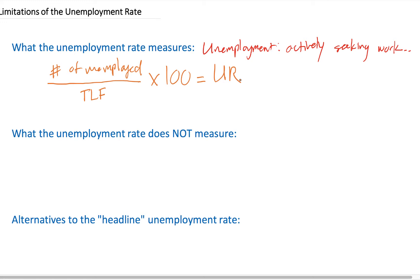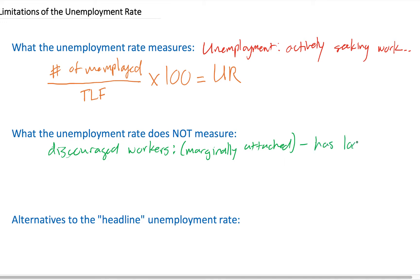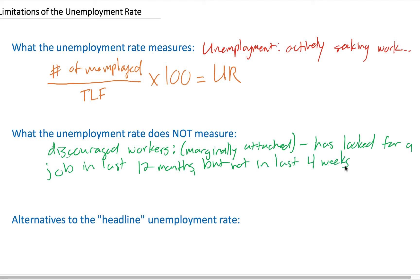That obviously is going to exclude a lot of people in the country who may not have jobs but wish that they did. The unemployment rate does not include what we call discouraged workers. Another word for discouraged workers is marginally attached workers — somebody who has looked for a job in the last year but not in the last four weeks because they've given up or become discouraged.